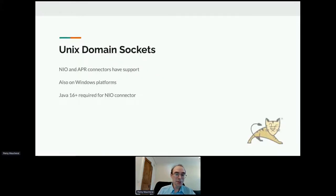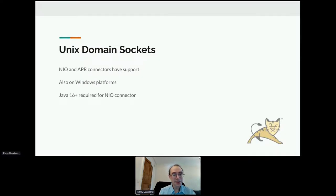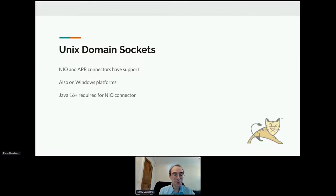Another feature added in Java 16 and above is Unix Domain Sockets support, now supported in Tomcat in the NIO connector. If you're using Java 16, you can now use Unix Domain Sockets to connect to a proxy server. Both NIO and APR have support for it, and I'm going to show a demo with NIO later on.